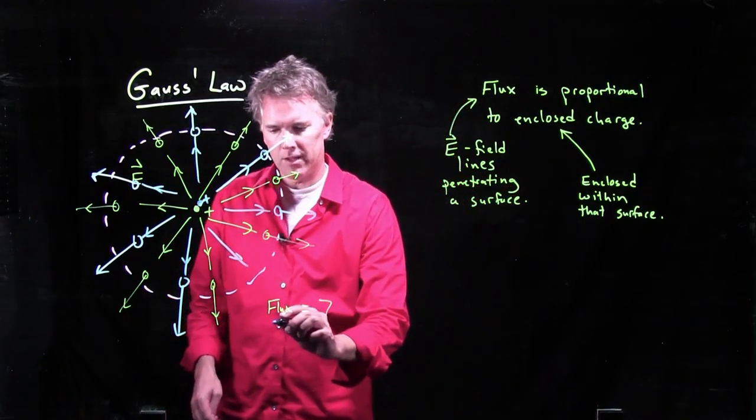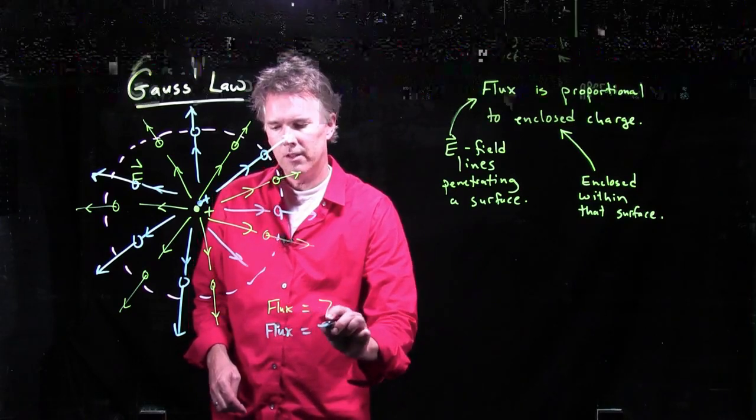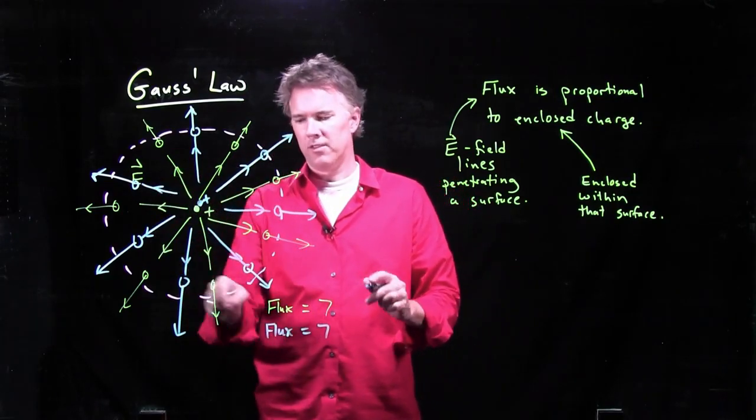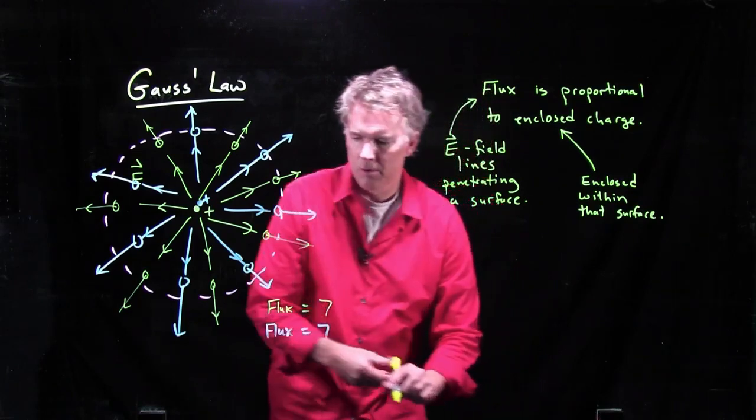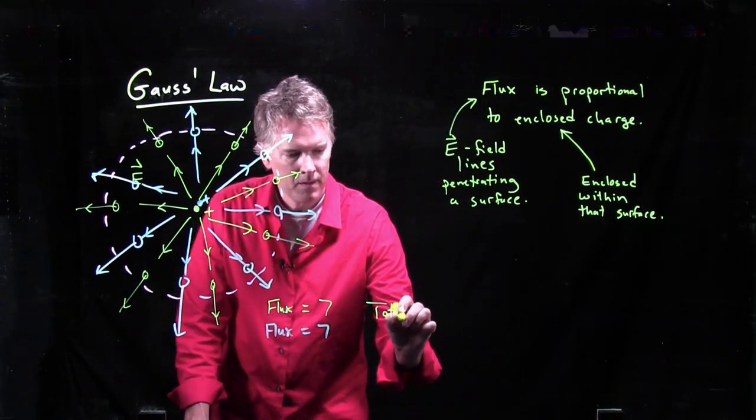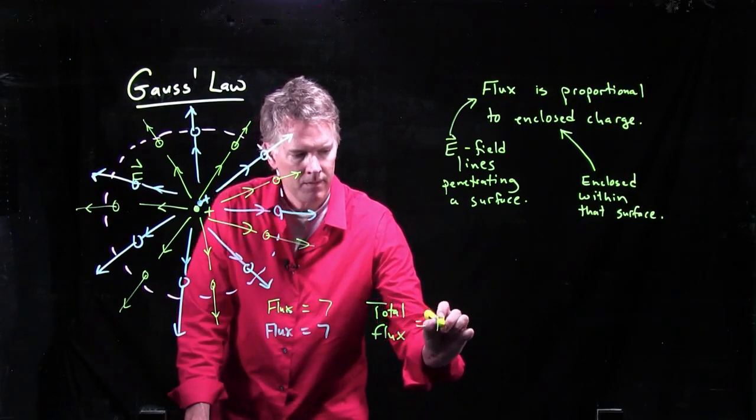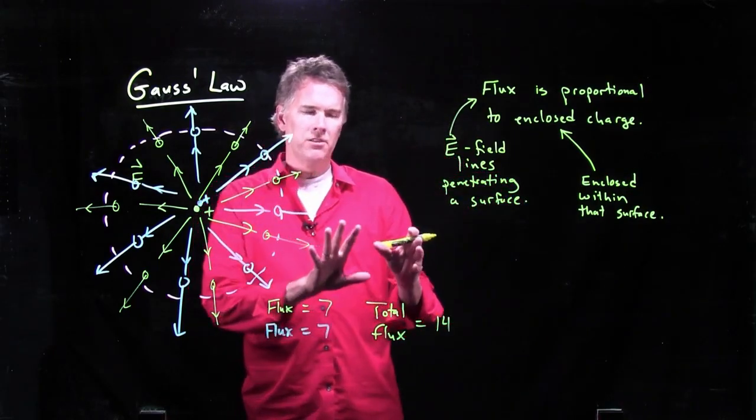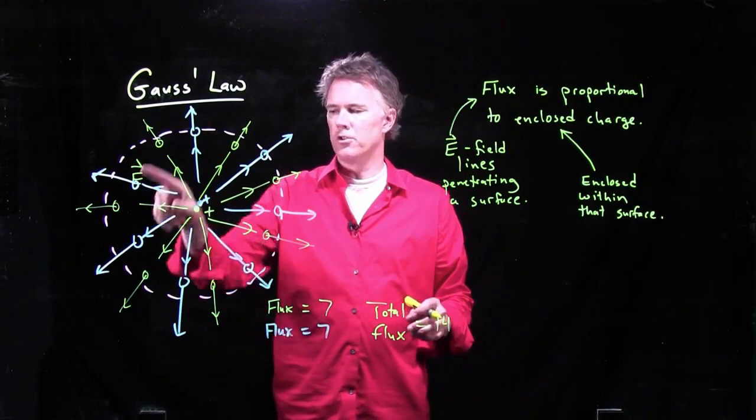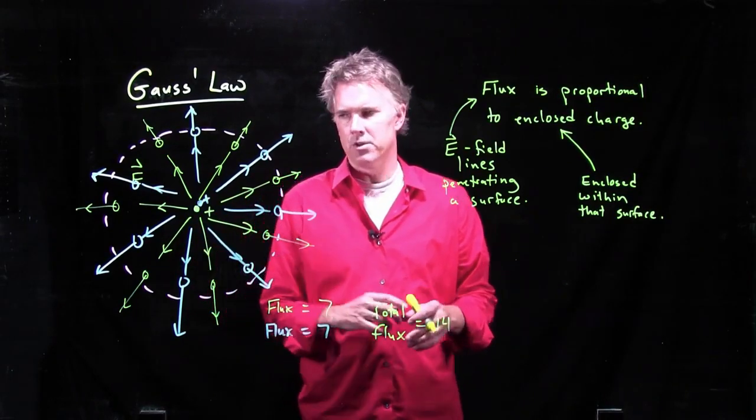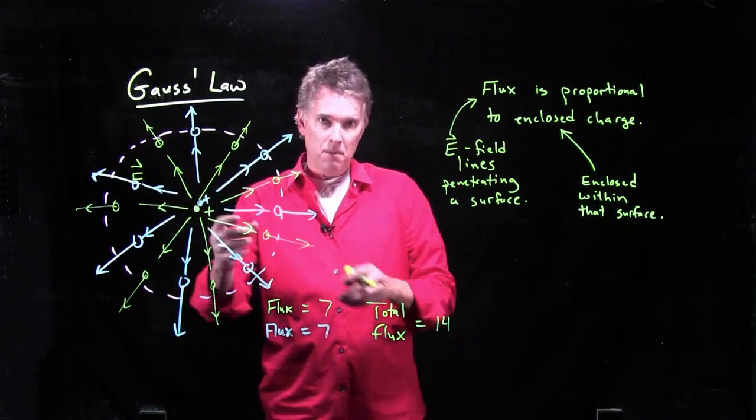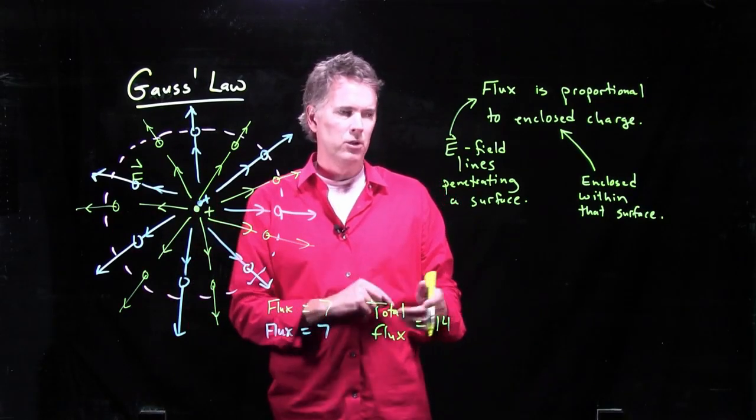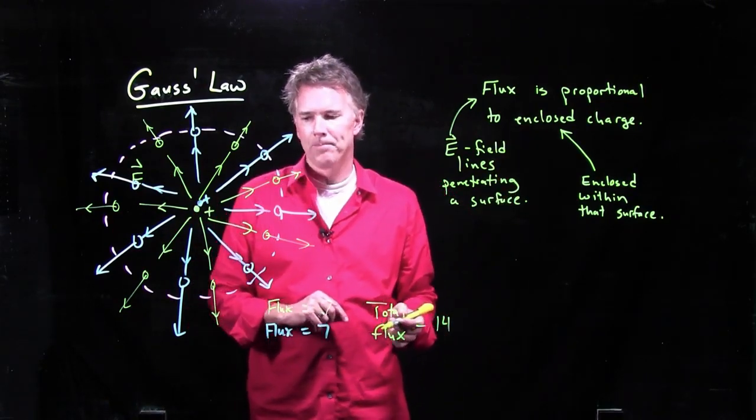Those electric field lines will also poke through the surface. So here they come. And now what's the total flux? Well, the flux from the green was 7, the flux from the blue is also 7. 1, 2, 3, 4, 5, 6, 7. And so the total now is 14. Now again, this is just a number with no units ascribed to this right now. It doesn't really mean much physically because we are just talking about a graphical picture of this electric field. More charge in there means more electric field lines coming out. It means more flux through the closed surface.